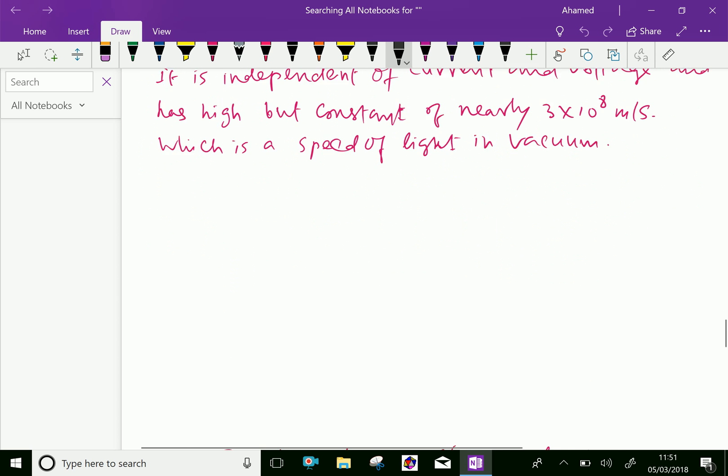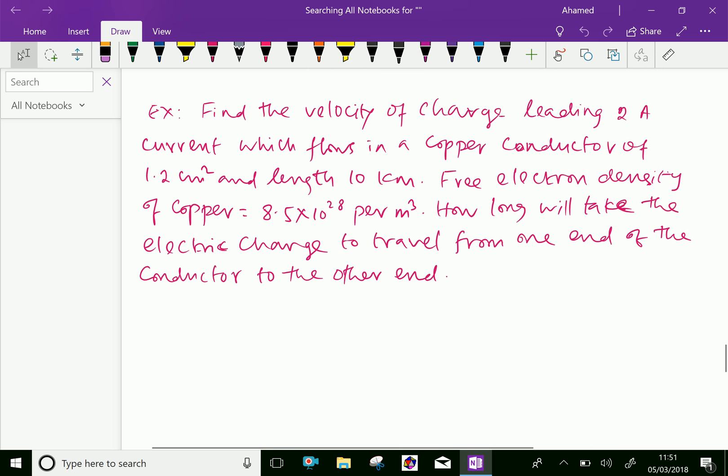Let us do an example to understand this concept. Find the velocity of charge leading to 2 amps current which flows in a copper conductor of 1.2 centimeter square and length 10 kilometer. The free electron density of copper is 8.5×10²⁸ per meter cube. How long will it take the electric charge to travel from one end of the conductor to the other end?